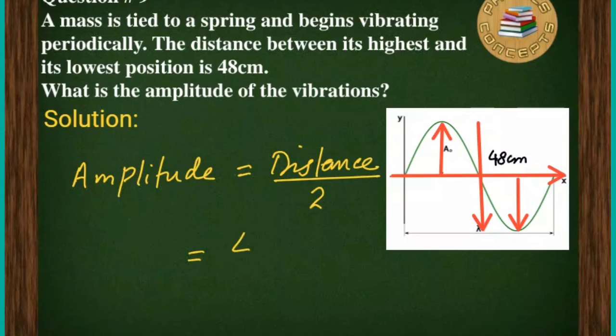So the distance is given to us as 48 cm. We will divide it by 2. So the amplitude would become in that case 24 cm.